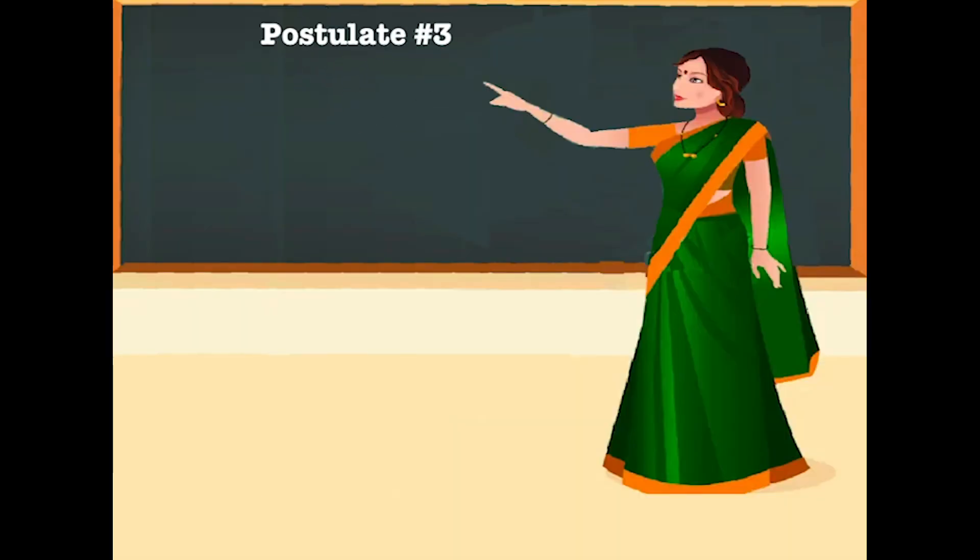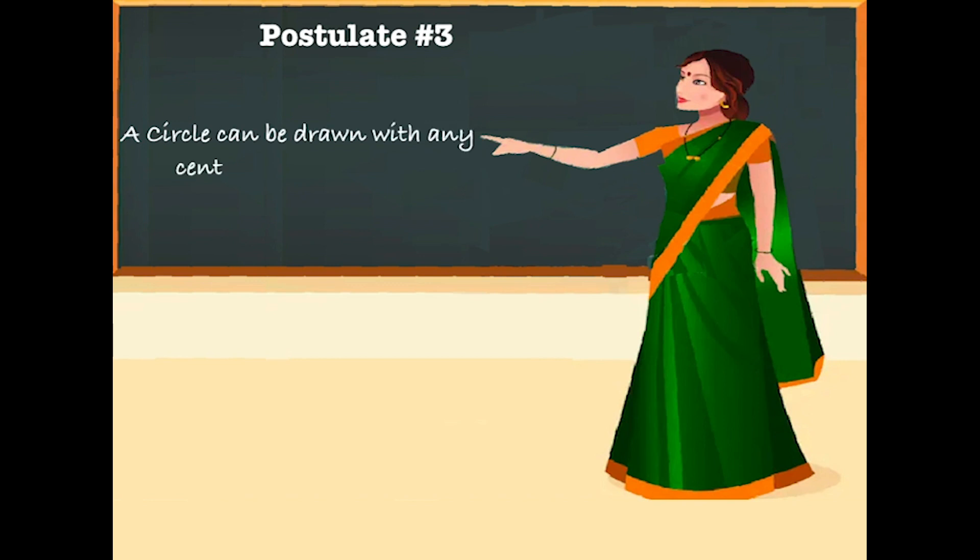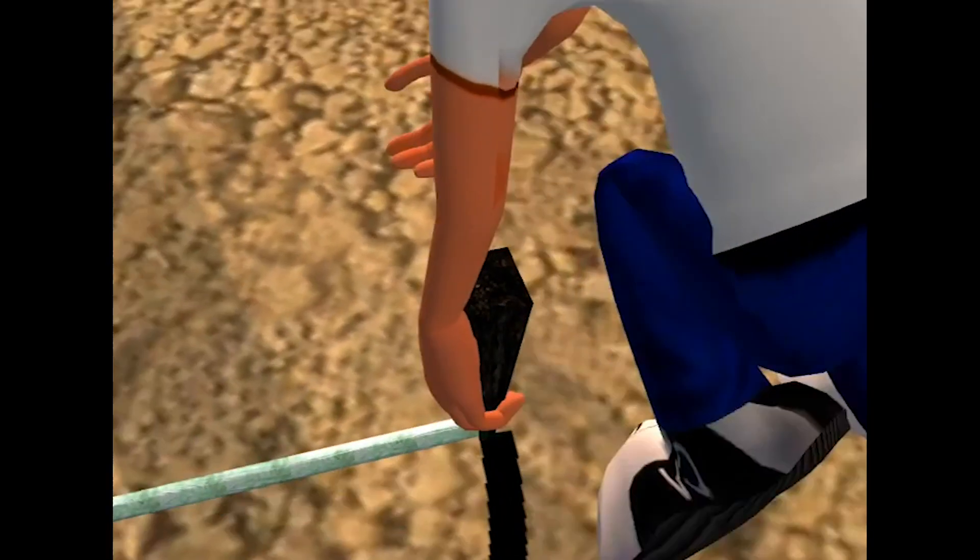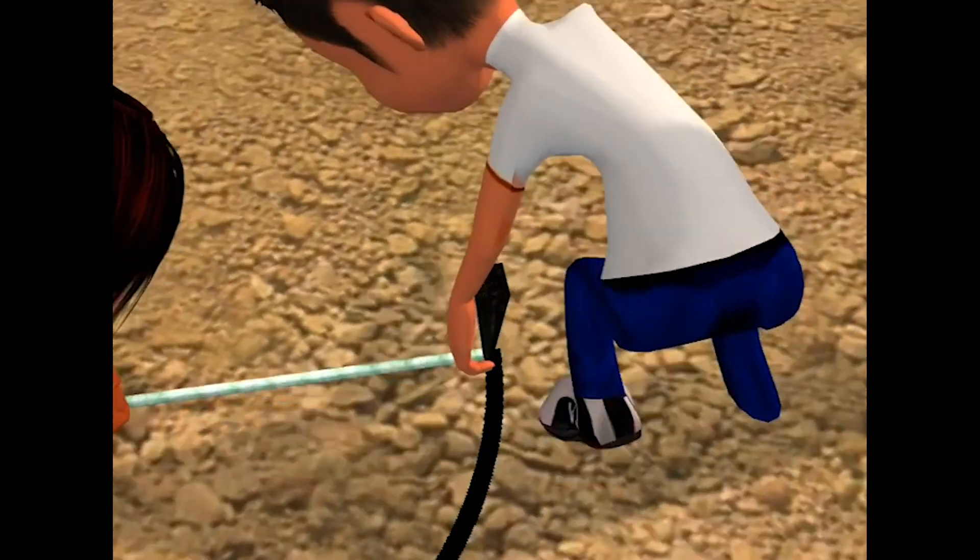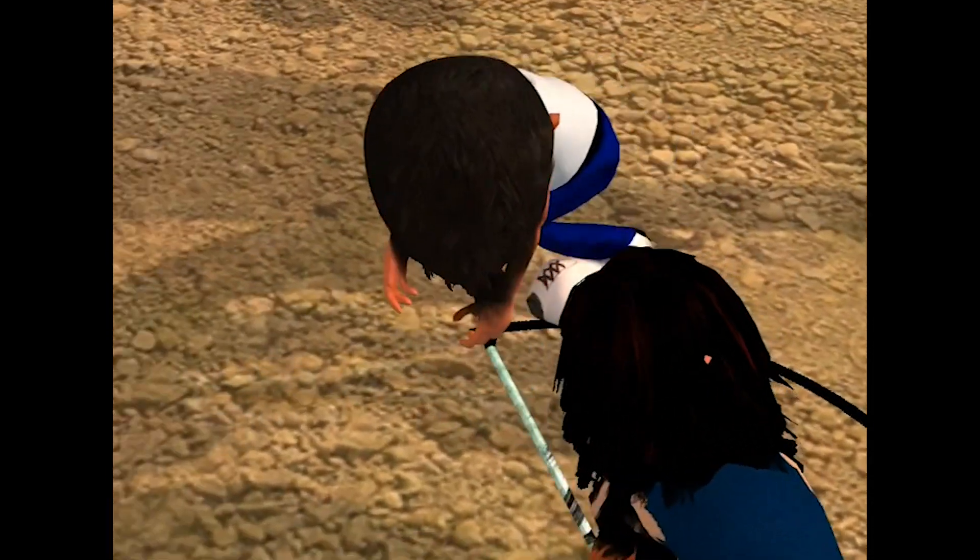Now postulate 3. It states that a circle can be drawn with any center and any radius. So you can see here that a circle is drawn with a given center and a radius.